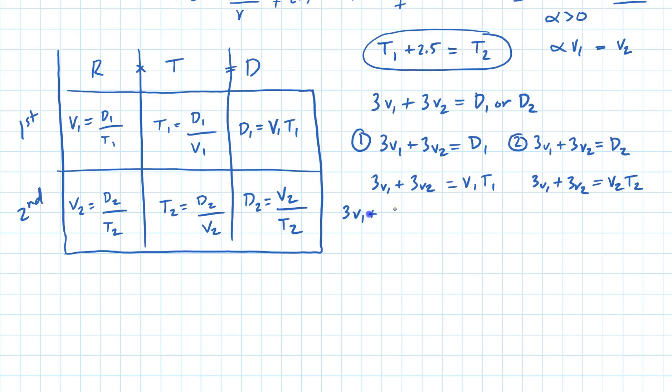So this equation is going to become 3 times V1 times 3 alpha V1 equals V1 times T1. And then I get rid of the V1, so I have 3 plus 3 alpha equals T1.